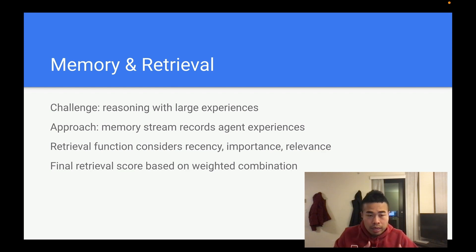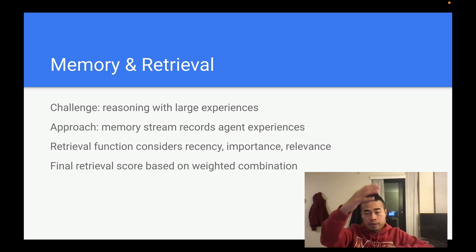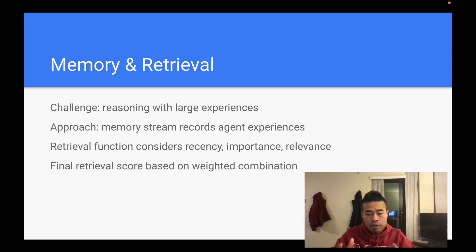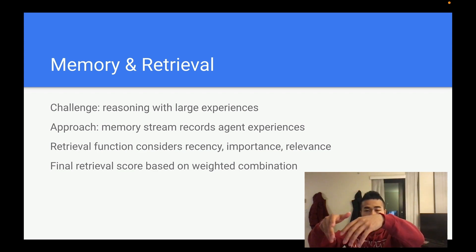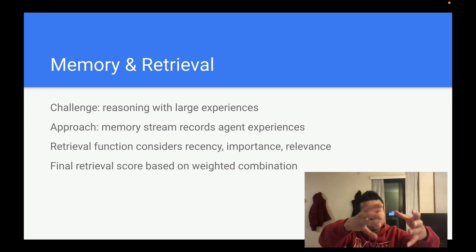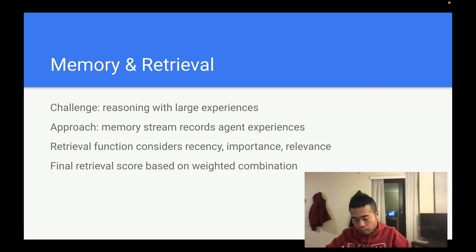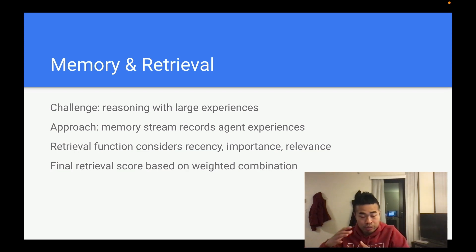You may wonder how these agents have memory of this. The challenge is that reasoning requires a large experience base. The approach is to create a memory stream that records agents' experiences. When you ask an agent something, it will retrieve relevant events from the memory stream based on three criteria: recency, importance, and relevance. These retrieved events then become input to ChatGPT, and ChatGPT responds to that.